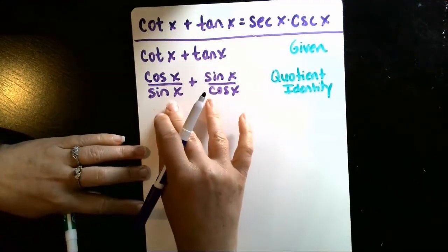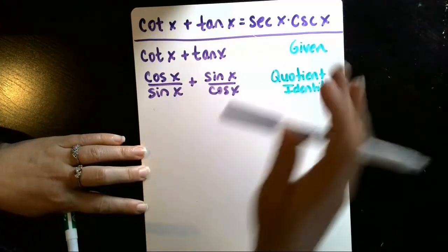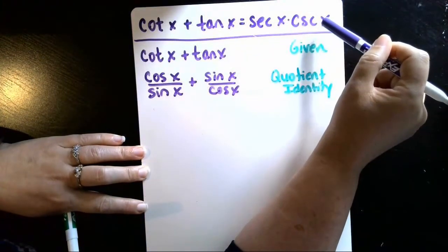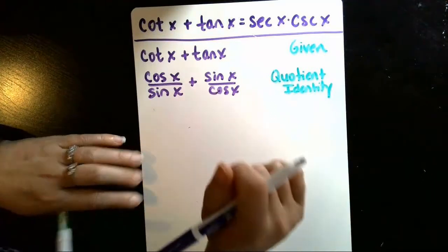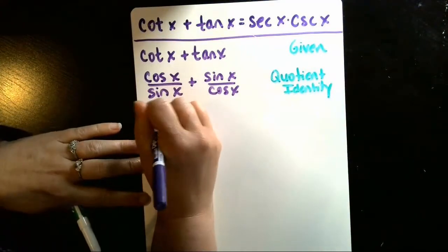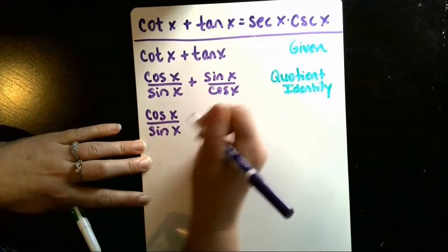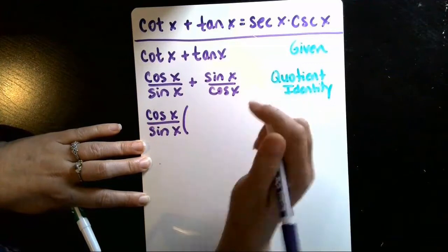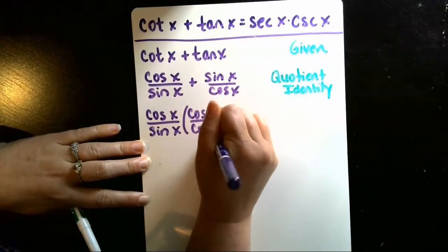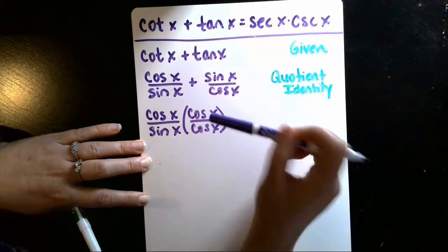Now I've got two fractions here that I want to add together because in my goal, I have a product, not an addition. So to combine these, I'm going to need a common denominator, and that means I'm going to take my first fraction, cosine divided by sine, and multiply that by the other denominator, cosine over cosine. So its value hasn't changed, right? Cosine divided by cosine of x is just one, but it will get me in the next step a common denominator.